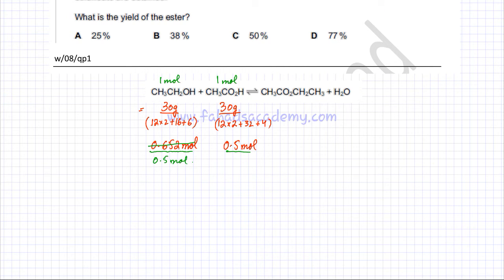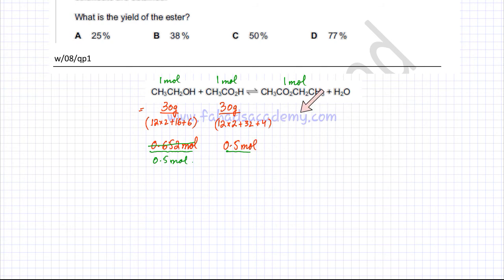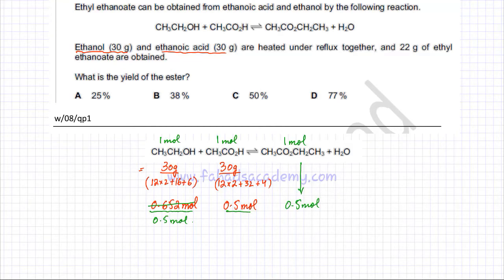According to the ratios, 1 mole of ethanol reacts with 1 mole of ethanoic acid to produce 1 mole of the ester. So 0.5 moles of ethanol reacts with 0.5 moles of ethanoic acid to produce exactly 0.5 moles of the ester. These are the theoretical moles of ester formed.